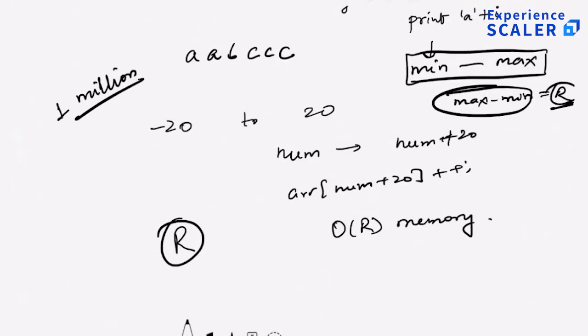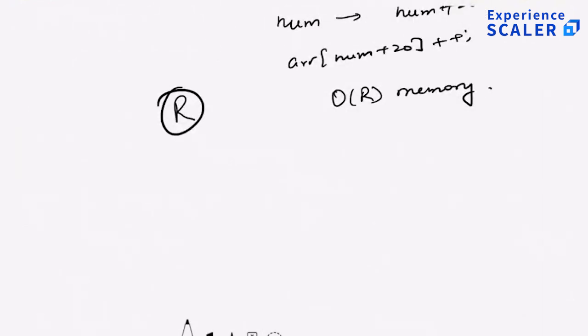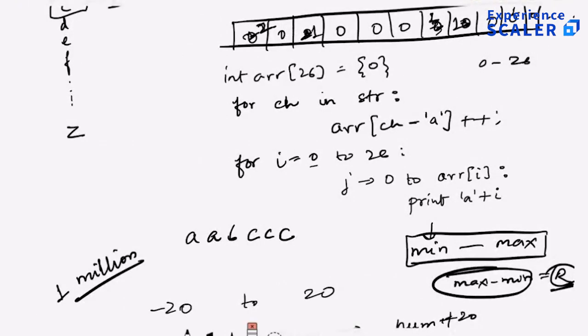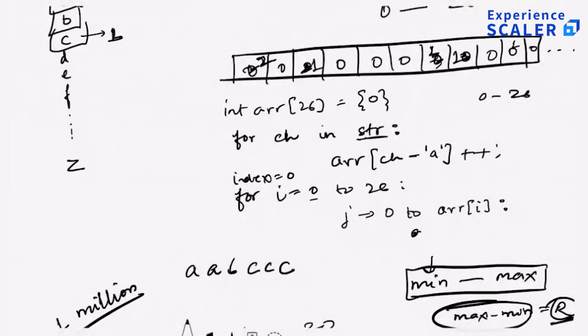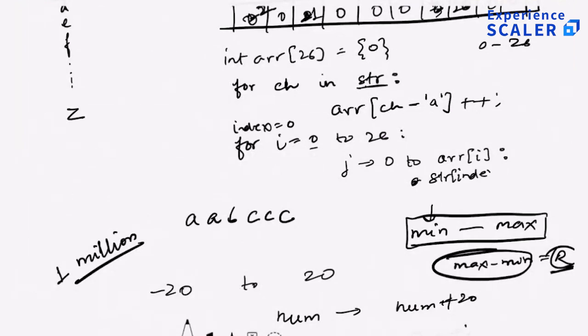So it is not done in place in the sense that you're still counting the number of A's, number of B's and C's, and then you can fill it in the same array. For example, if you said, tell me here, instead of printing A plus I, I can just say, you know what, let's have an index variable, which is zero. And I have, let's say my original string was str. I can just say, you know what, str of index plus plus is equal to I plus A. I can fill it in the same array instead of printing, but I mean, you'll still have to maintain counts, etc.